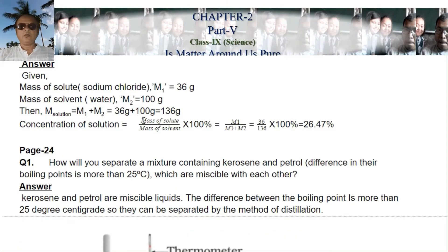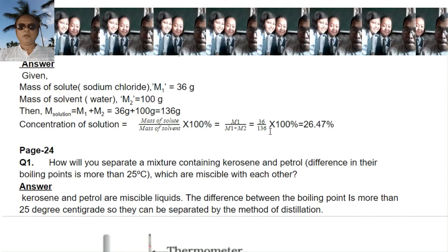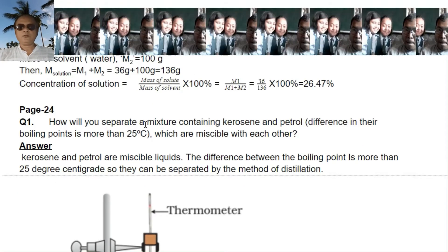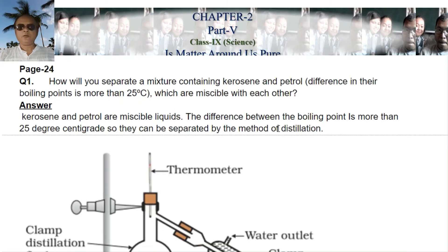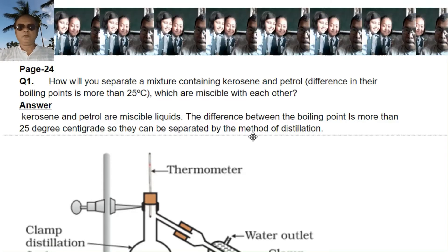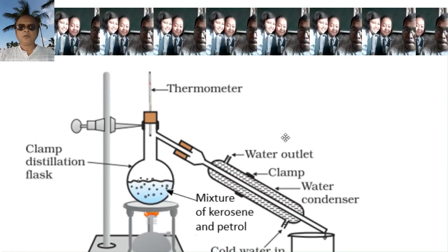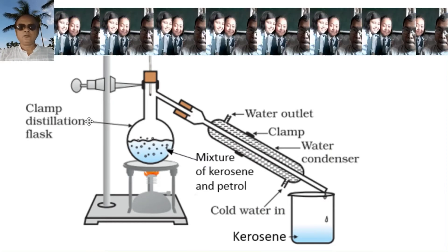Concentration of the solution = (mass of solute / mass of solution) × 100% = M1 / (M1 + M2) × 100 = 36 / 136 × 100 = 26.47%. Now go to page number 24. The question is: how will you separate a mixture containing kerosene and petrol, given that the difference in their boiling points is more than 25 degrees centigrade and they are miscible with each other? Since the boiling point difference is more than 25°C, they can be separated by distillation.